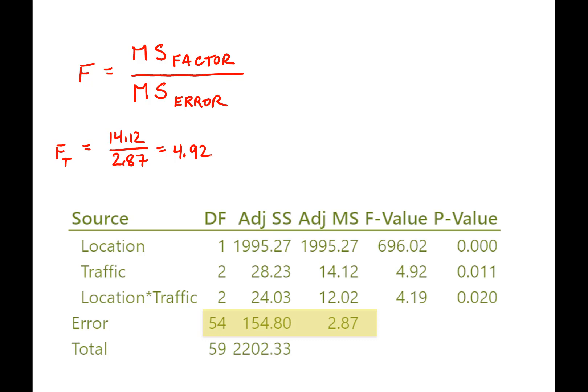Remember earlier in the video, I said, remember 14 over 38, which is what it was before? Well, the only thing that's changed, right, is the mean square term for error has now reduced a ton because so much of the variability was explained by location in this case, which is one of the new factors.